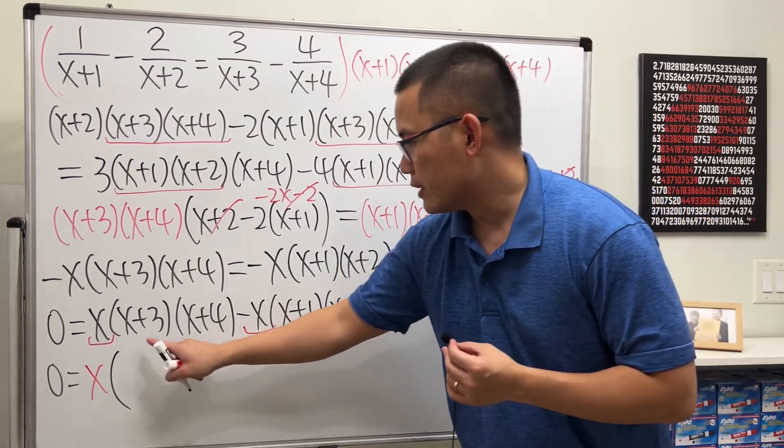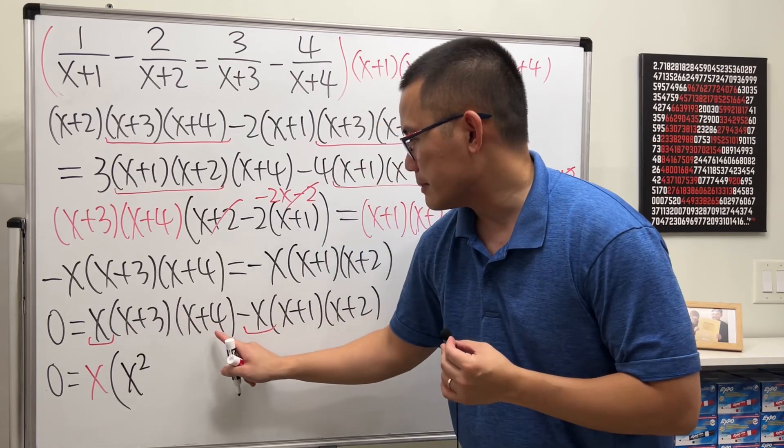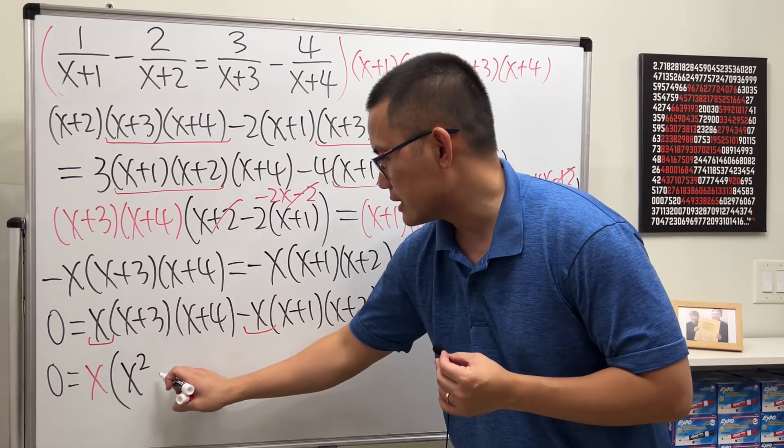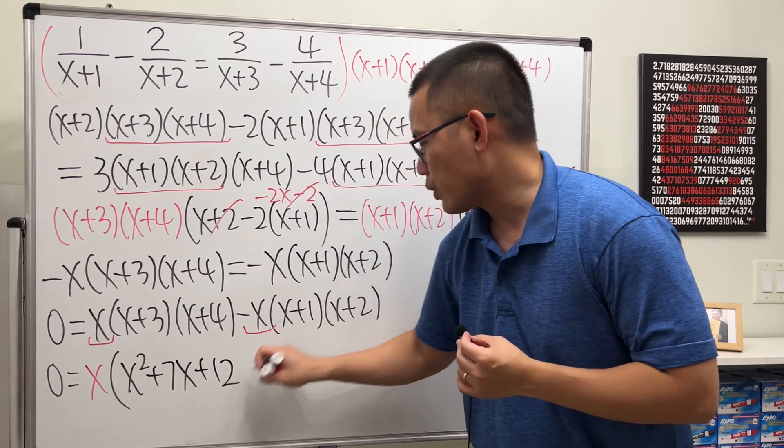This, let's just multiply it out. So we will get x times x, which is x squared. x times 4 is 4x. And then we have 3x here. So that's 7x, and then 12.